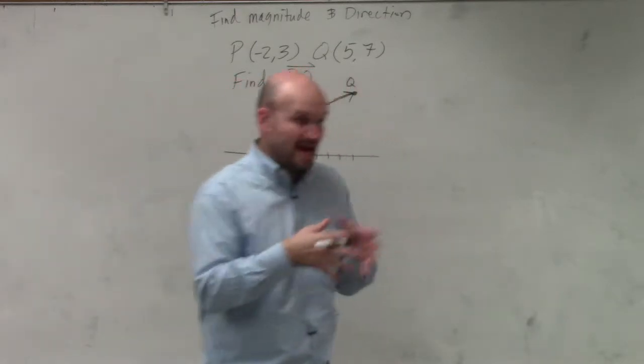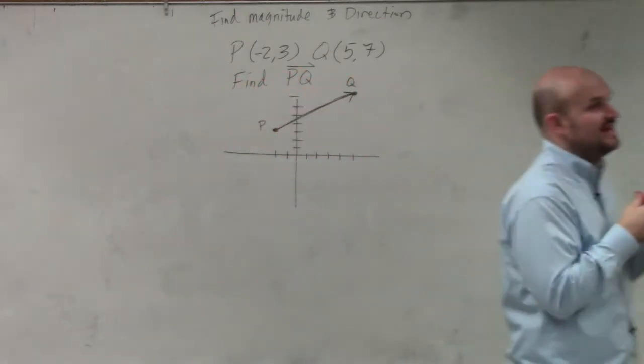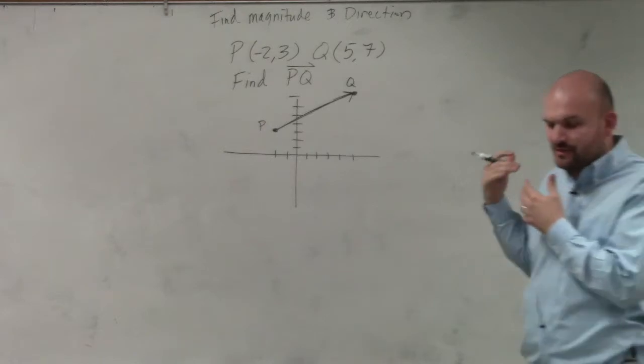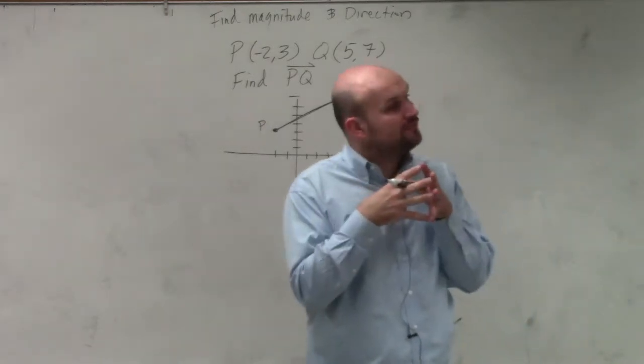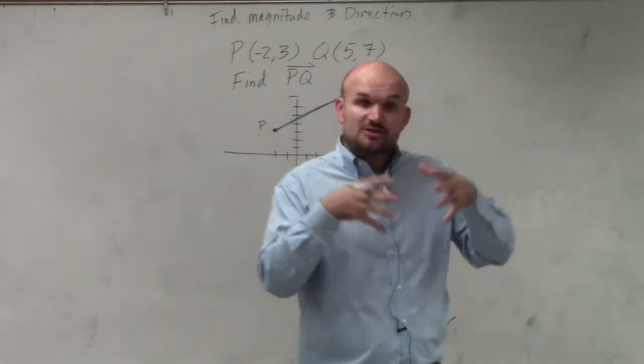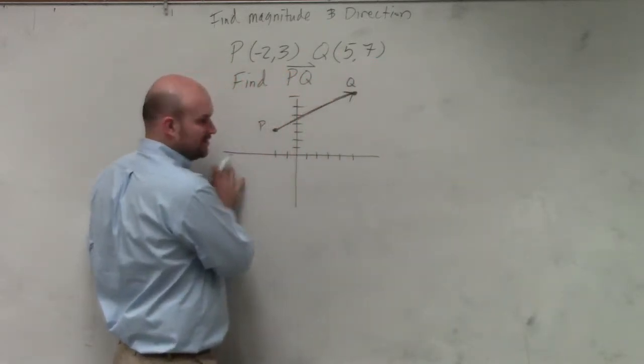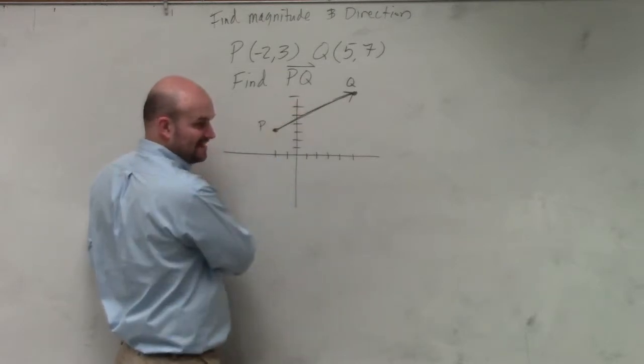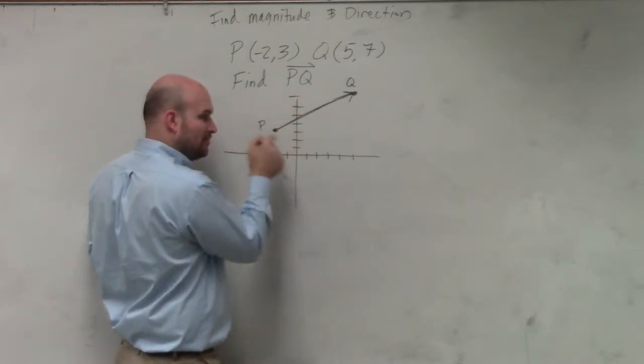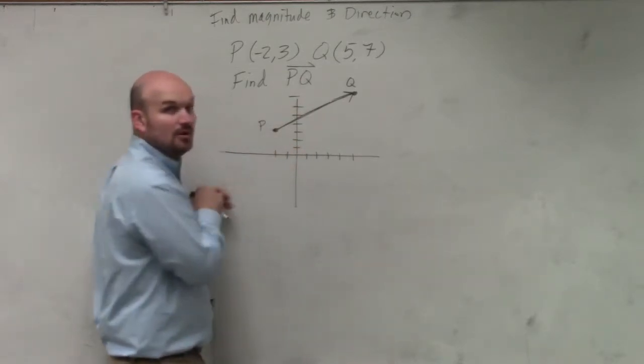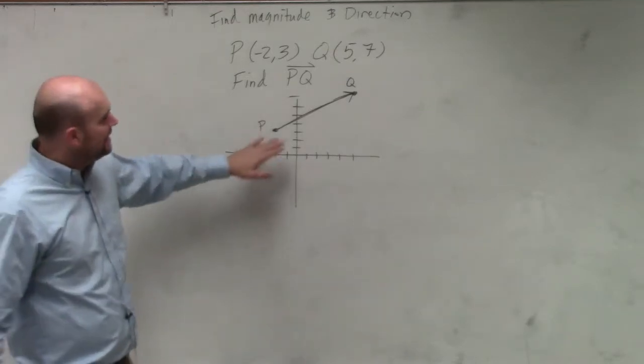So that's currently what we have. But what we're actually trying to do is find the component form of PQ. So to find the component form, what we're looking for is this exact same vector, but with our initial point at 0, 0.